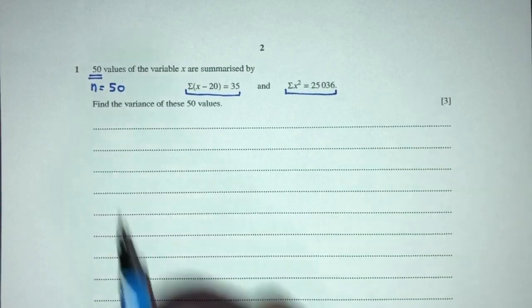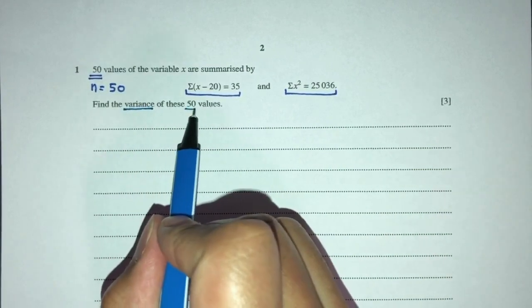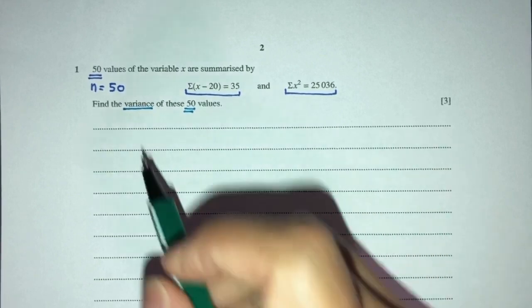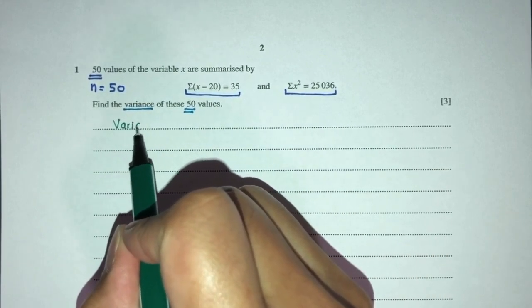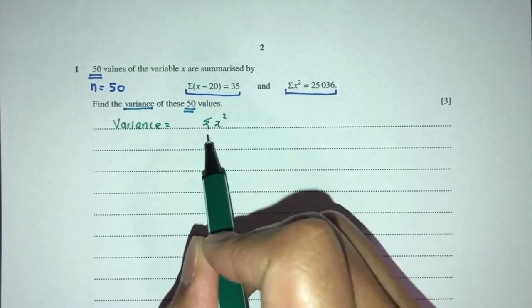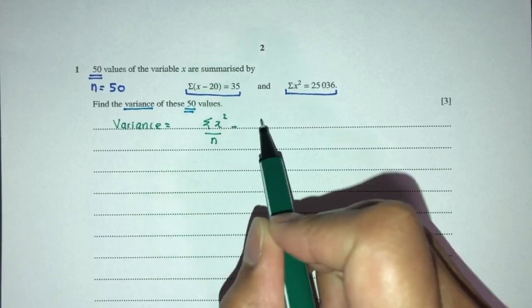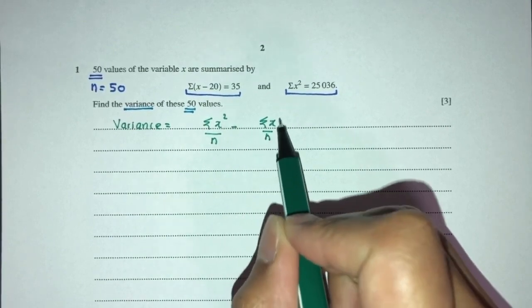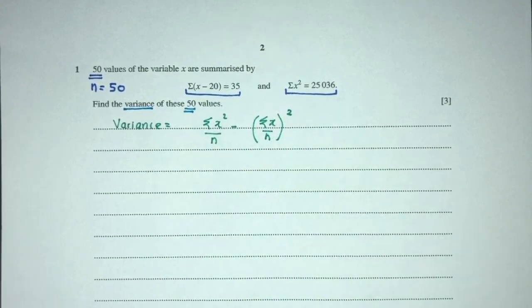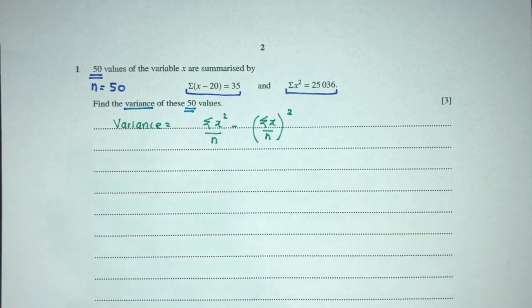Now finally, we have to find the variance of these 50 values. Before we begin doing the question, we have to know how do you find variance. We should know variance has a formula here. Let's focus on finding these values before doing that.